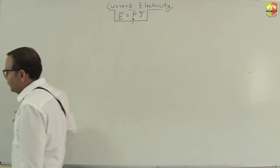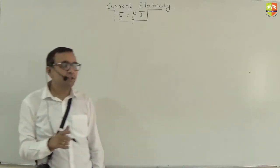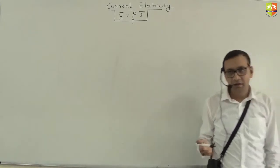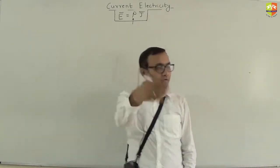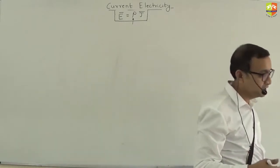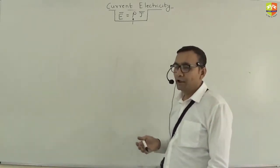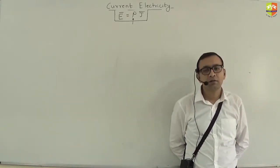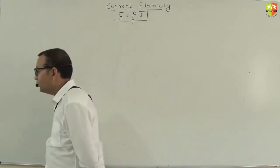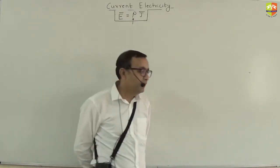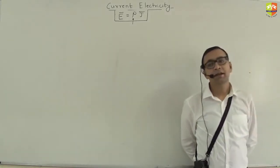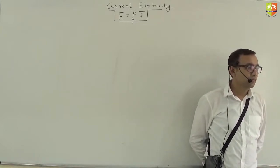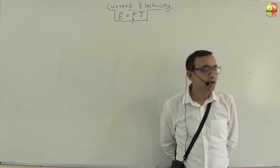There are a few assumptions before we proceed, just like in kinetic theory of gases we had a list of assumptions. Write down assumption number one: electrons are moving freely inside the metal unless they encounter a collision.